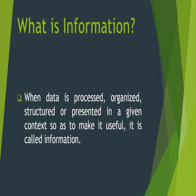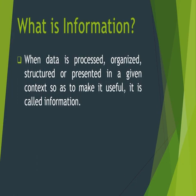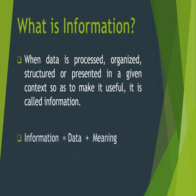What is information? When data is processed, organized, structured, or presented in a given context so as to make it useful, it is called information. That means when you organize your data and create it in some way that you can use it, that is known as information. Information is basically the combination of data and whatever meaning you want to give to that data.